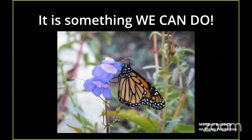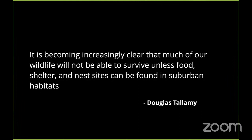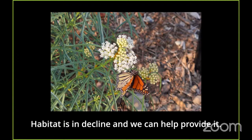I really like this quote from author Douglas Tallamy. He's written a number of books about home habitat gardening for a nationwide audience — I encourage you to check out his books. He wrote: 'It's becoming increasingly clear that much of our wildlife will not be able to survive unless food, shelter, and nest sites can be found in suburban habitats.' And we can provide that in urban habitats as well. Habitat is in decline from development and changed agricultural practices. This is narrowleaf milkweed — milkweeds are the required larval food source for monarch butterflies. I have a small patch in my backyard and most months we have monarch butterflies, caterpillars, and chrysalises.